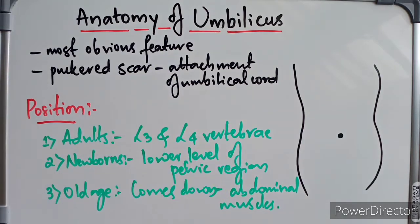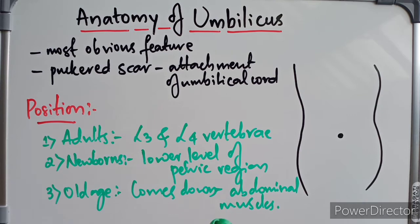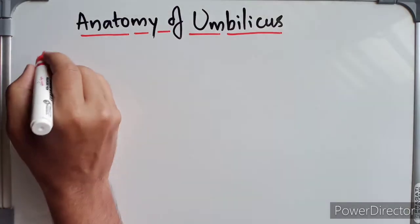To summarize: the umbilicus is the most obvious feature of the abdominal wall and is a puckered scar with attachment of the umbilical cord. Its position varies — in adults it is at L3 and L4, in neonates it is slightly lower in the pelvic region, and in old age it descends due to the weak tone of the abdominal muscles. Now we are going to look at the anatomical significance of the umbilicus.